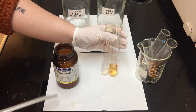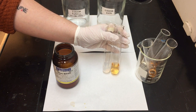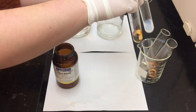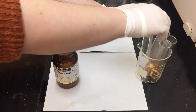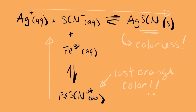In mixing the solution, we can see our control is on the right. In adding our silver, we've completely lost all of the color from our solution. The silver in this competition has won out and created all silver thiocyanate, and the iron currently in solution is not forming any iron thiocyanate — hence why we have lost all of that orange color.